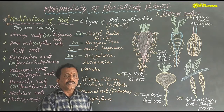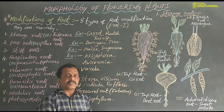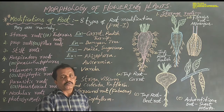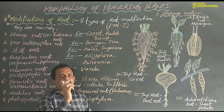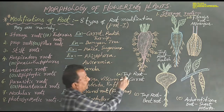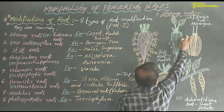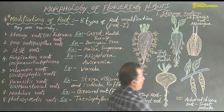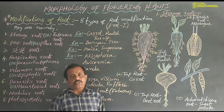In general, angiospermic plants are present in mainly three types of root systems. The first one: tap root system. Second one: fibrous root system. Third one: adventitious root system.